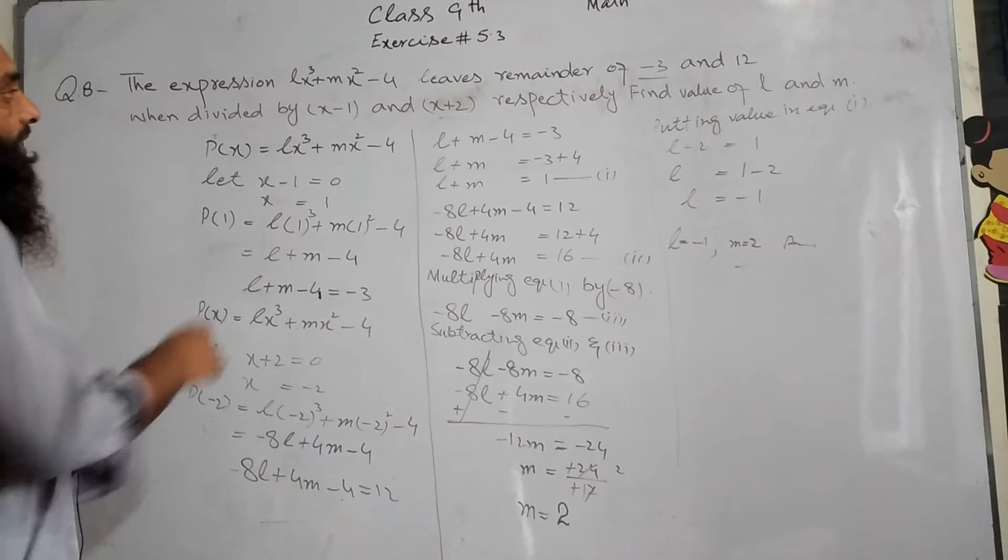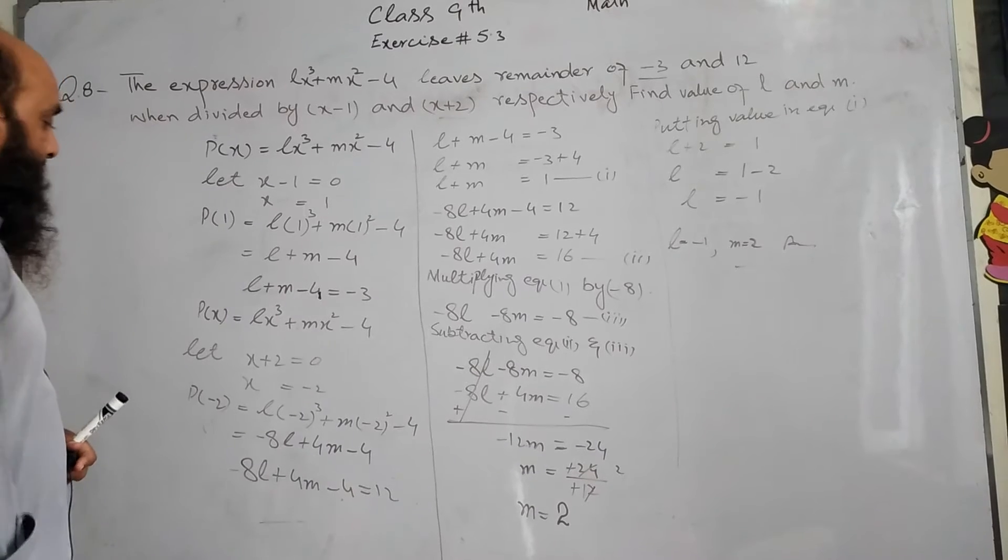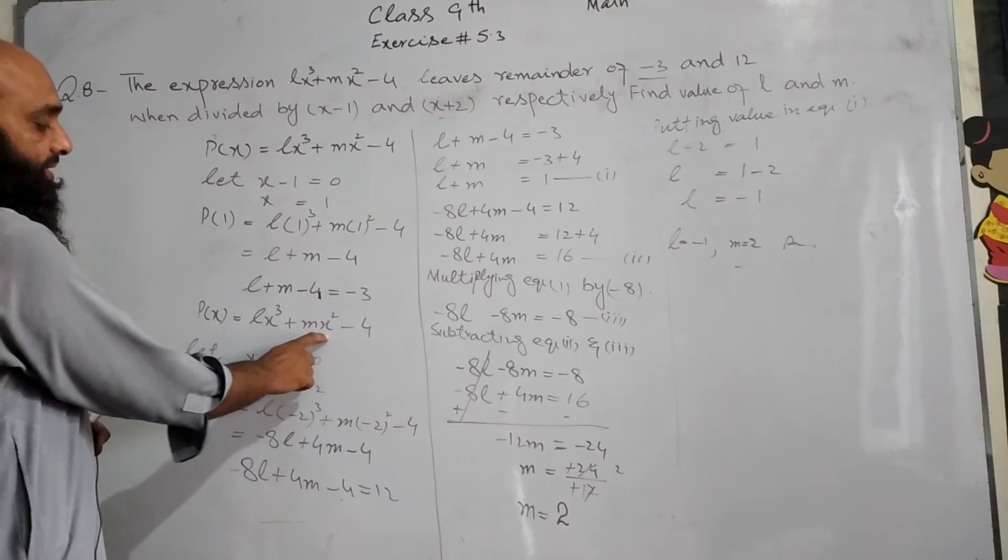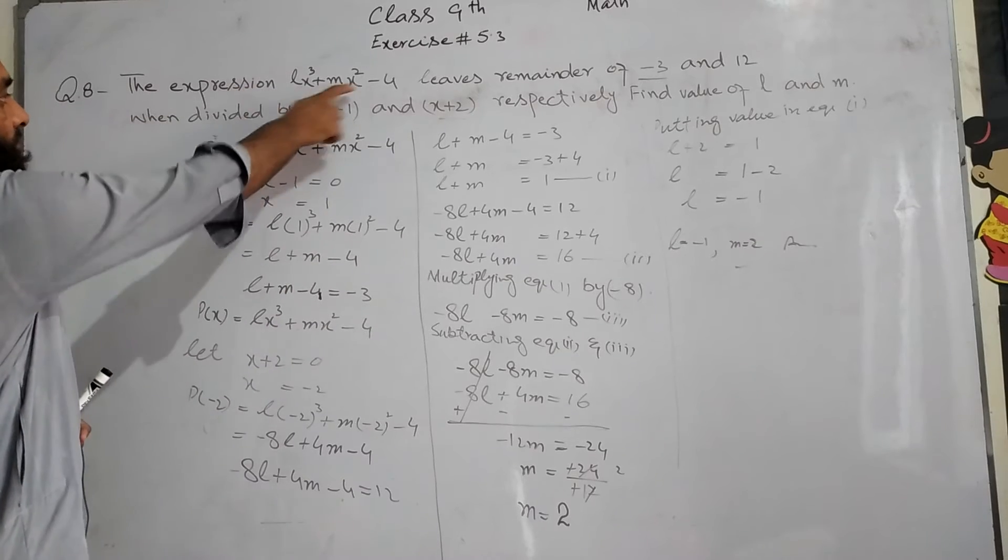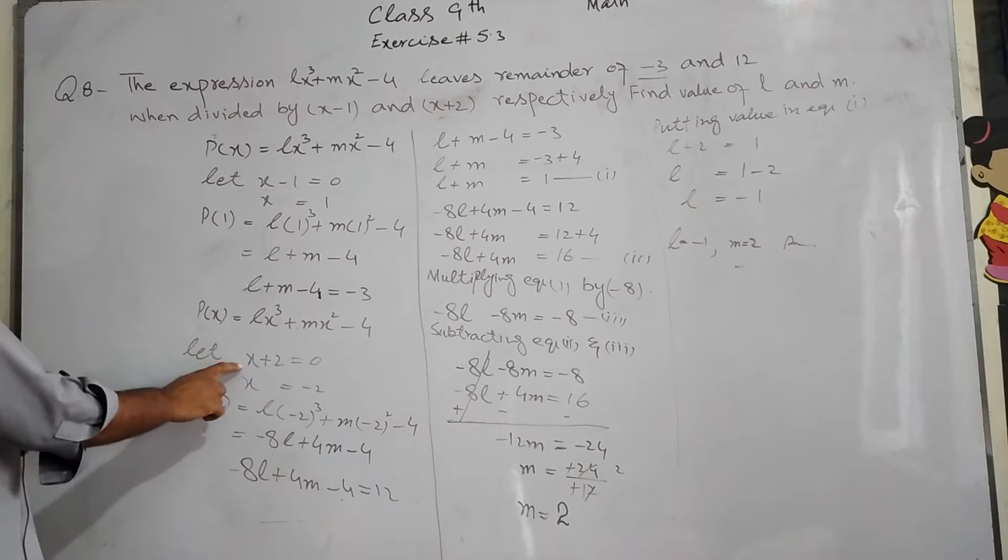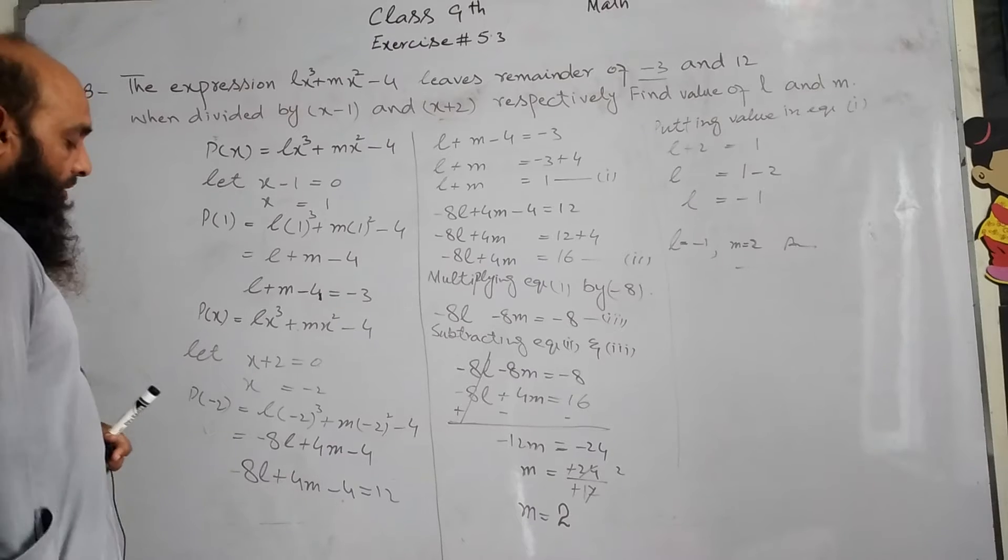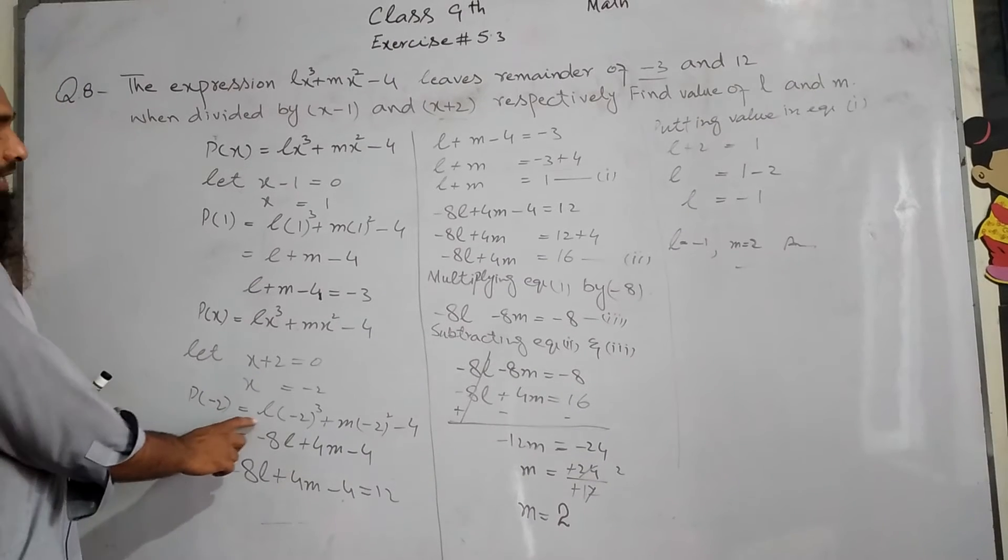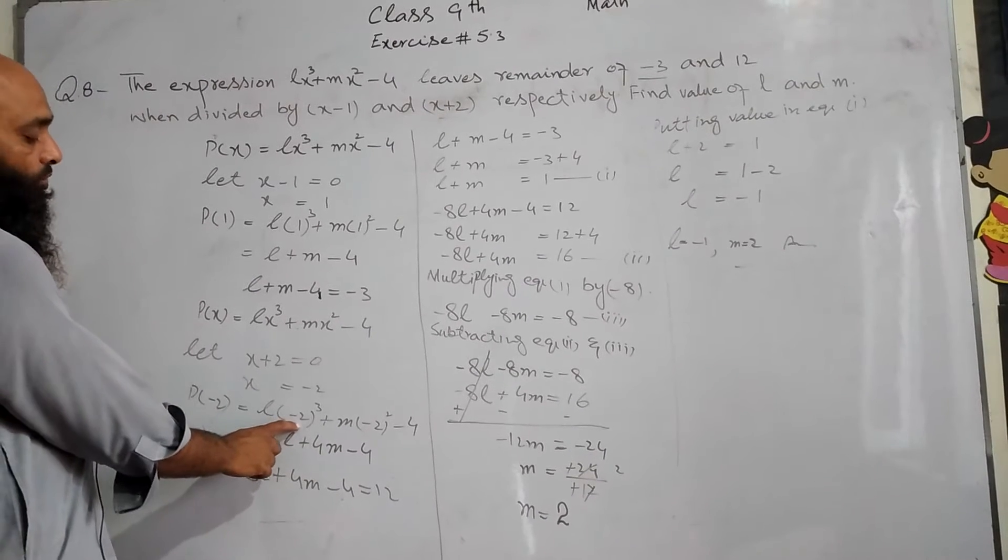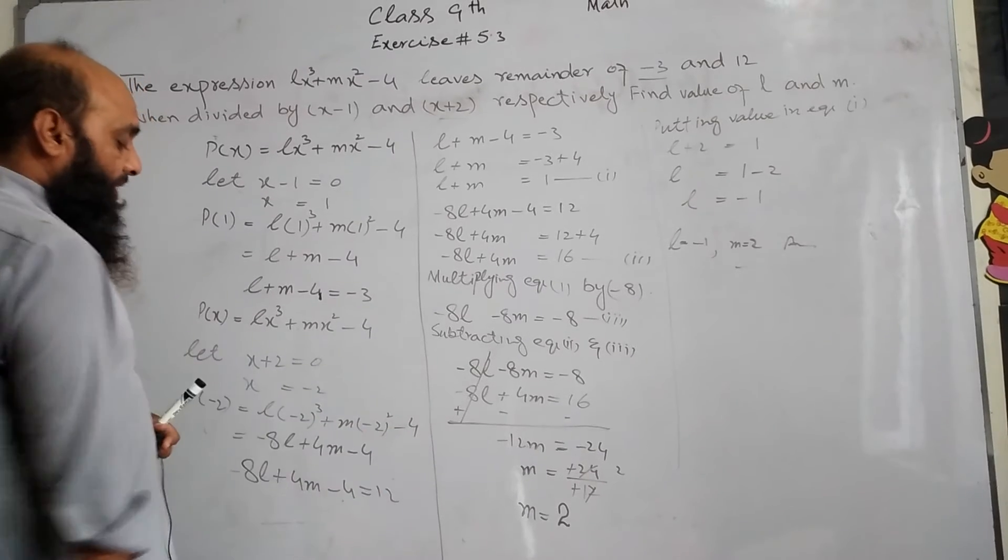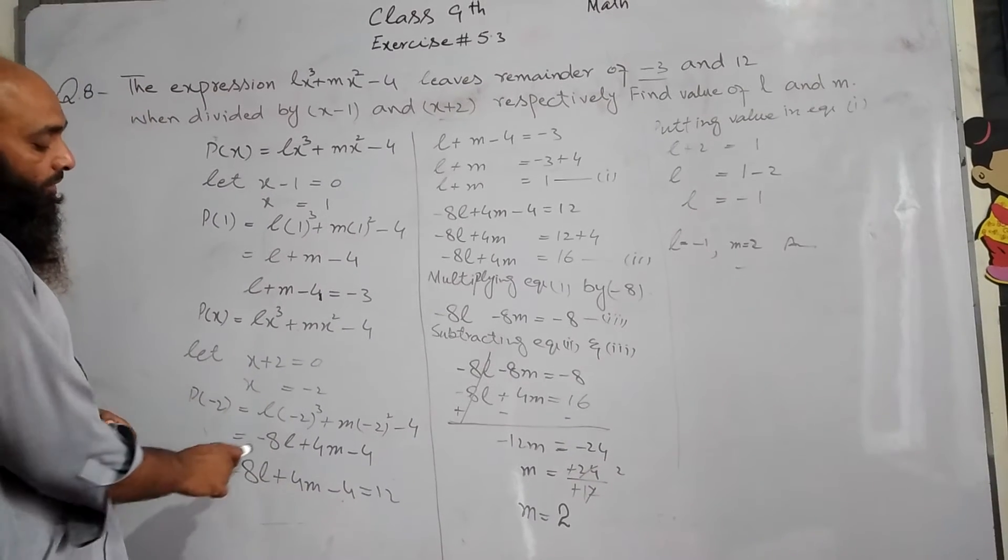Next case is when we divide by x+2. So we do P of x equals to lx² plus mx minus 4. Let x+2 equals 0, so x equals to -2. And what happens? P of -2. So P of -2, we get l times (-2)² plus m times (-2) minus 4.